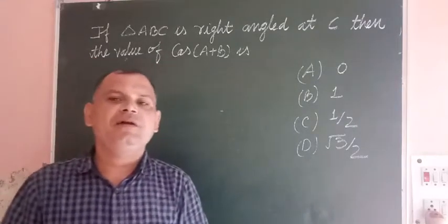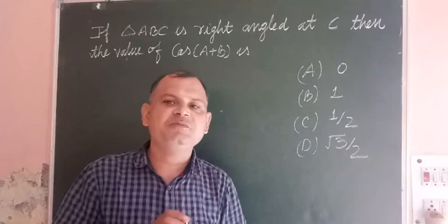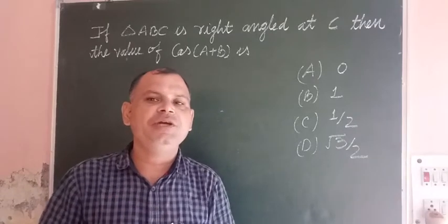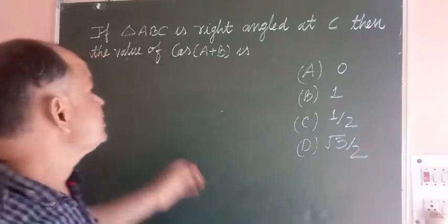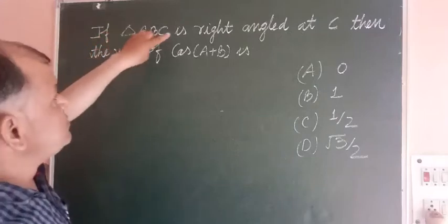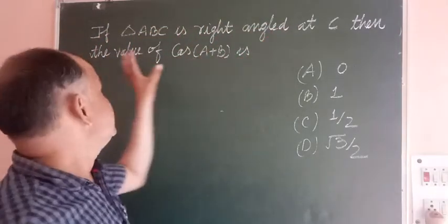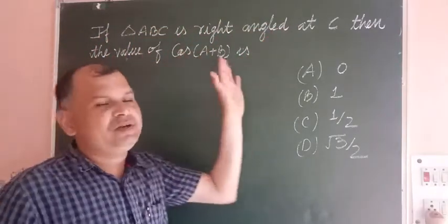Hello student, Abhan, welcome in this class. In this class we solve a problem related to trigonometry and the question is: if triangle ABC is right angled at C then the value of cos(A+B) is.